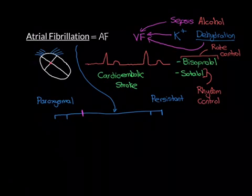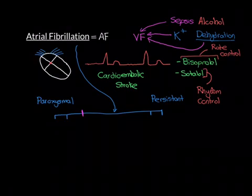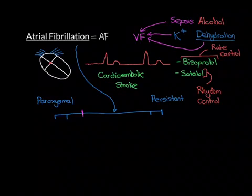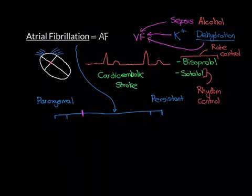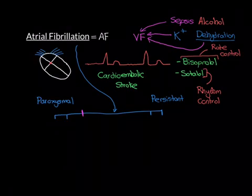Ischemic heart disease, both with and without MI, can lead to the development of abnormal atrial tissue and therefore atrial fibrillation. The other big one is high blood pressure — and we're talking now about systemic high blood pressure. When we say hypertension, we mean hypertension of the systemic arterial system, the aorta, as opposed to pulmonary hypertension, which is hypertension of the pulmonary arterial system.